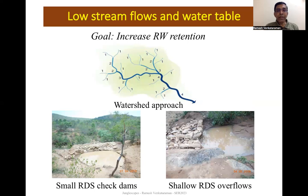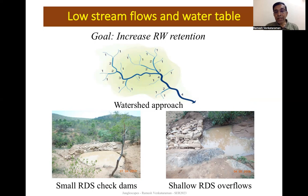We also observed low stream flows and low soil moisture levels across large parts of the site. We followed a watershed approach, mapping primary and secondary order streams and devising methods to increase stream flow. On the left you can see a small rock detention structure called a check dam, used for harvesting water and attracting herbivores which carry seeds. On the right is a stone overflow structure that slows water flow, increasing the water table in surrounding areas. All of these are made from locally available stone and earth.